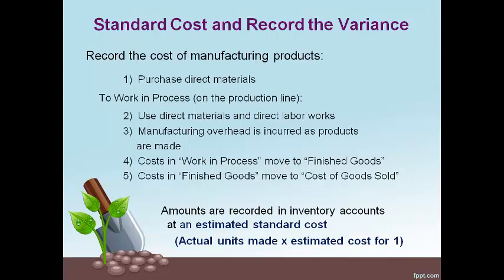The amount recorded to work in process is always the standard estimated amount — quantity of units made multiplied by the estimated cost to make one unit. At the end of the period, the inventory accounts and the cost of goods sold have a balance that is estimated, or at standard.